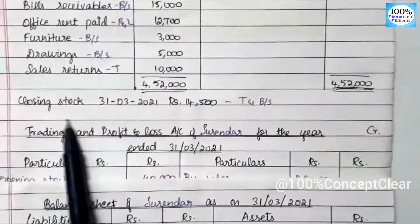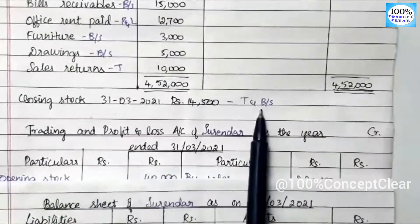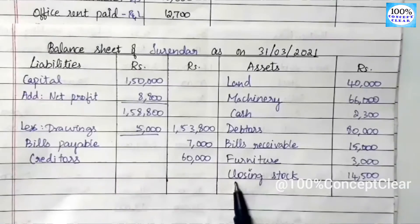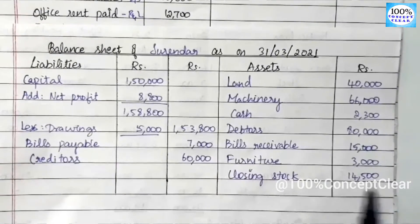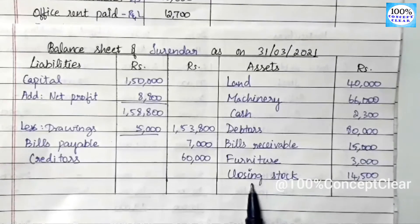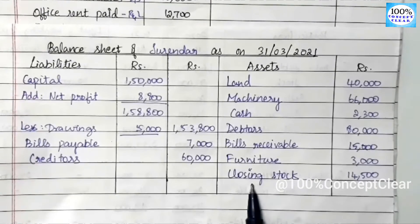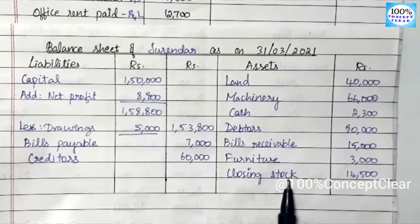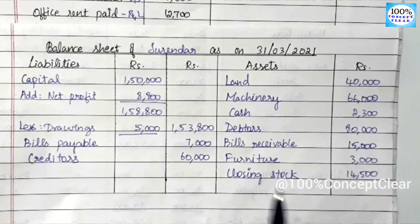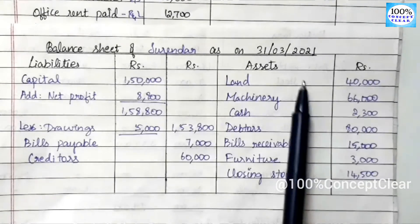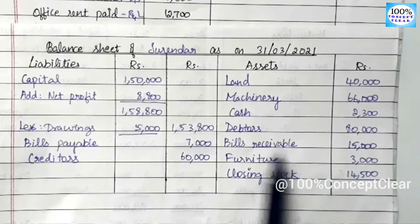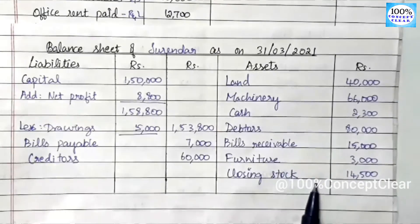Next we have the adjustment item: closing stock at $14,500 will appear in the balance sheet as an asset. In this year we have closing stock and opening stock sale — that is why we have it as an asset. Closing stock represents goods remaining in business that we have not yet sold.